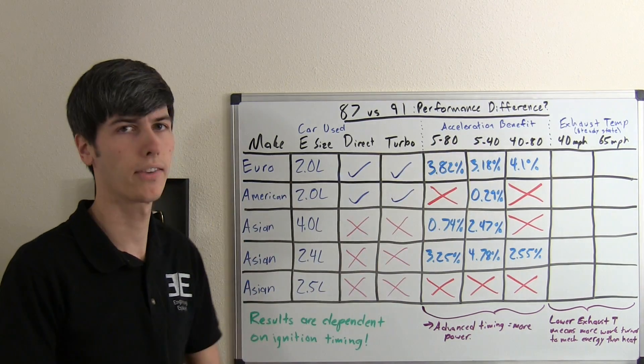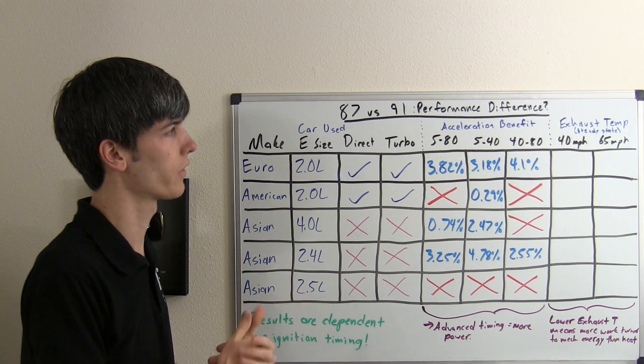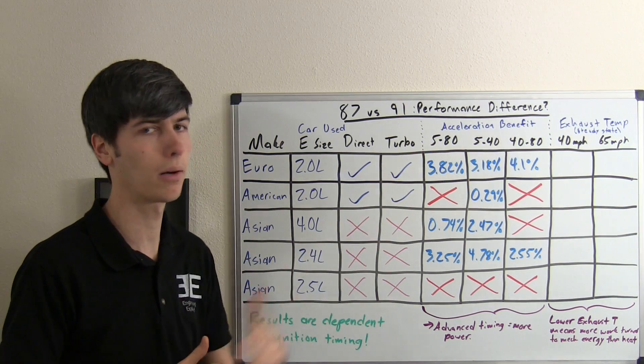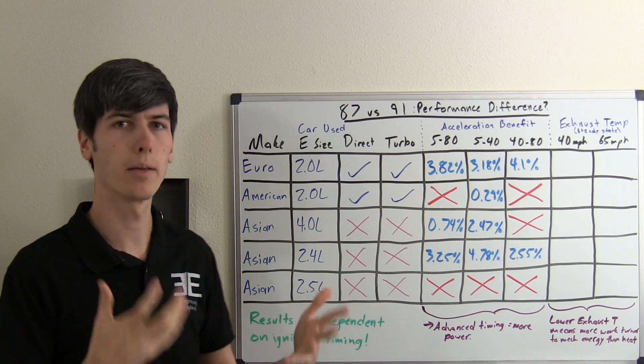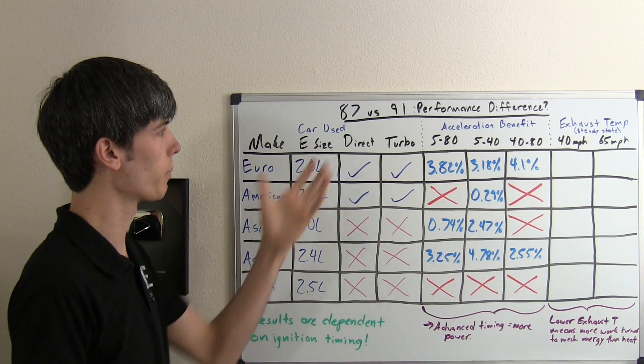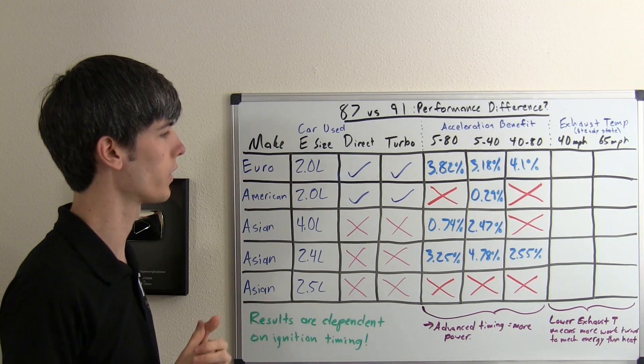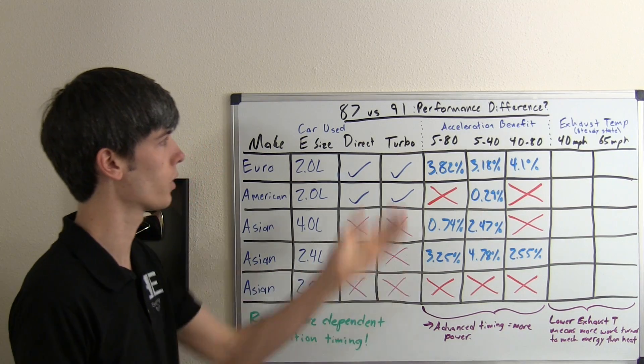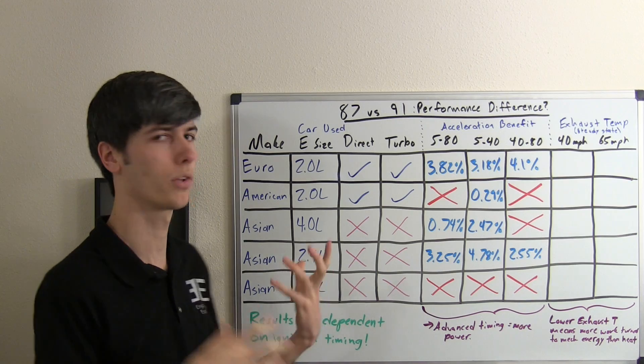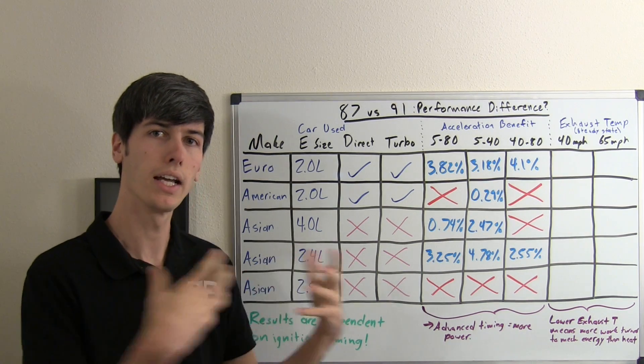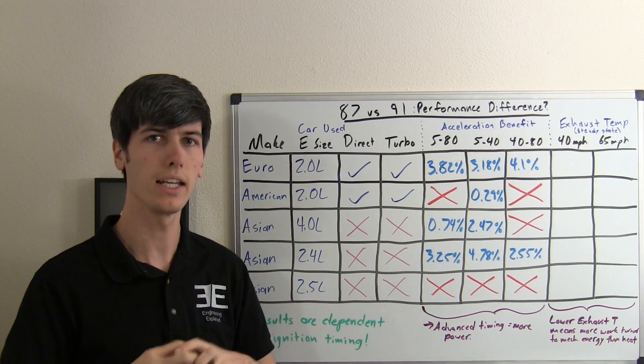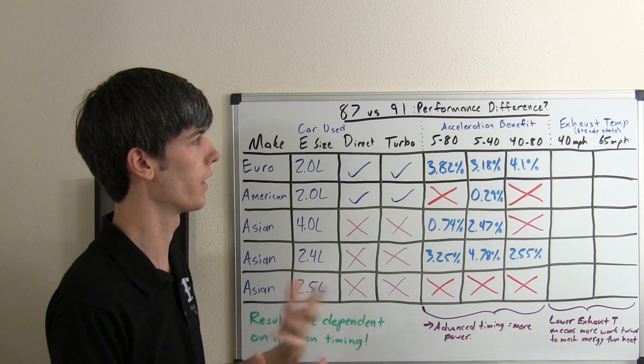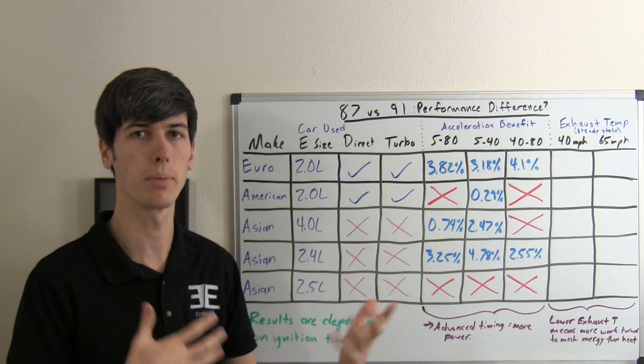Now let's move on to exhaust gas temperatures. In this portion of the test, they keep the vehicle at a set speed, either 40 or 65 miles per hour, and measure the exhaust gas temperature with both 87 and 91 octane fuels. They're looking for a decrease in exhaust gas temperature using the 91 octane, because you're converting more of the energy of the gasoline into useful work rather than heat sent out the exhaust. Lower exhaust gas temperatures show that the engine is being more efficient.